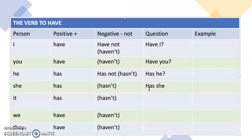So I have, I haven't, have I. You have, you haven't, have you. He has, he hasn't, has he. She has, she hasn't, has she. It has, it hasn't, has it. We have, we haven't, have we. They have, they haven't, have they.